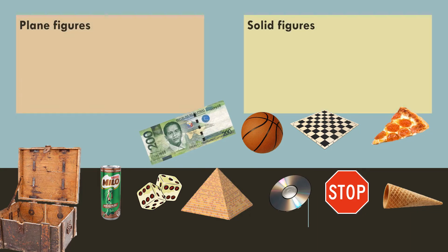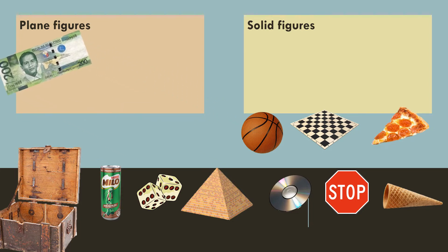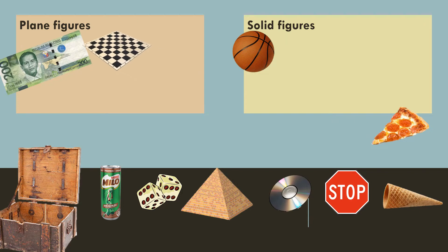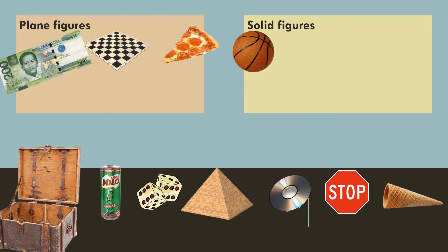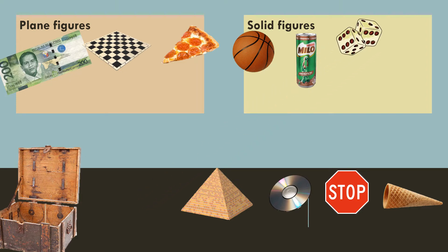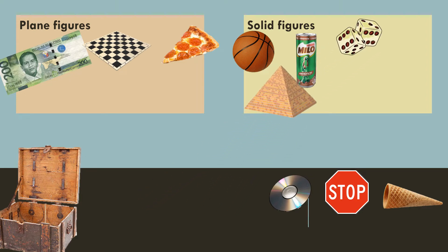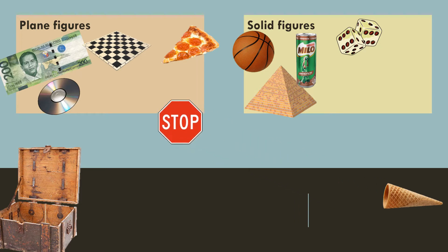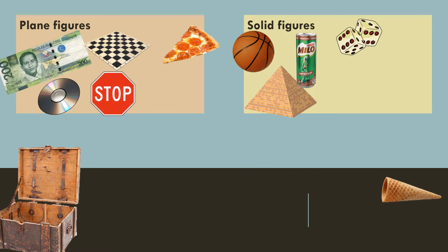First, the 200-peso bill — as you can see, that's a plane figure, it's flat. Next, the ball — that's a solid figure, that's a sphere. The chessboard is flat, so that's a plane figure. Pizza is a plane figure. The can is a solid figure. The dice is a solid figure. Pyramid is a solid figure. The compact disc is a plane figure. Stop sign is a plane figure. Cone is a solid figure.